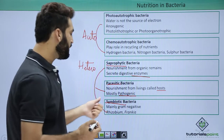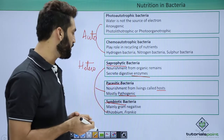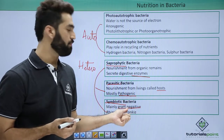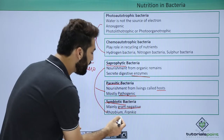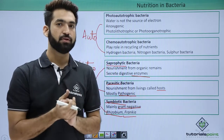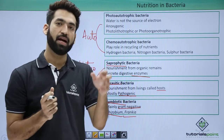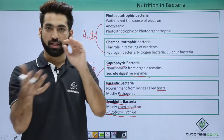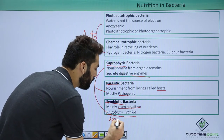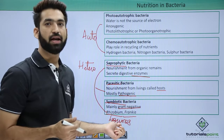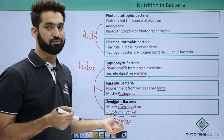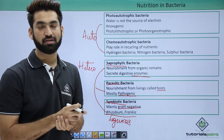Symbiotic bacteria — 'sym' means together and 'biotic' means life, so two lives are living together. Symbiotic bacteria are gram-negative. Two important symbiotic bacteria are Rhizobium and Frankia. Both can fix nitrogen when associated with plants — they fix nitrogen for the plant and take nourishment from the plant. Rhizobium makes a symbiotic relationship with legumes, forming root nodules in leguminous plants such as pulses and members of Leguminosae.